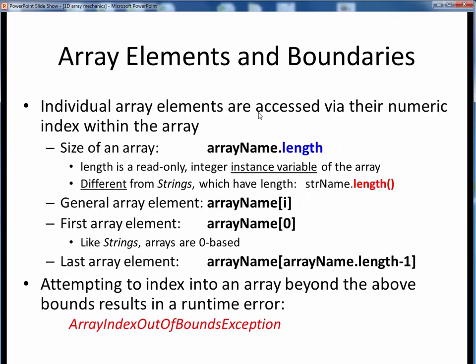Whenever we want to access specific array elements, we use their numeric index position within the array, just as we did for strings. The size of an array is given by the length parameter, which is automatically available to us for any array, and is a read-only, integer instance variable of the array. This is a little different than for strings, because now length is a numerical parameter, as opposed to a method called length. And this is a common point of confusion when using arrays. Also when we want to access a specific element of an array, we do so using this square bracket notation, not parentheses or curly braces.